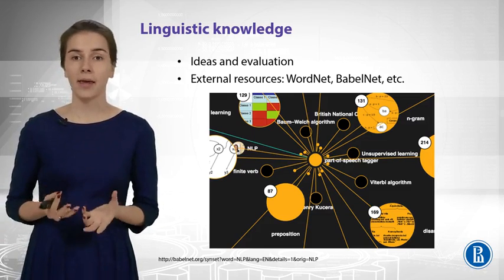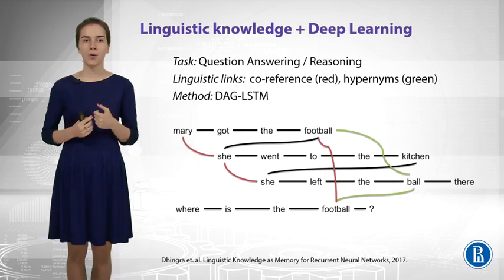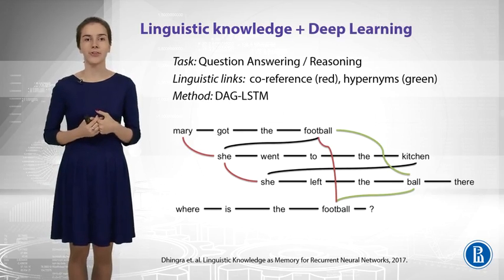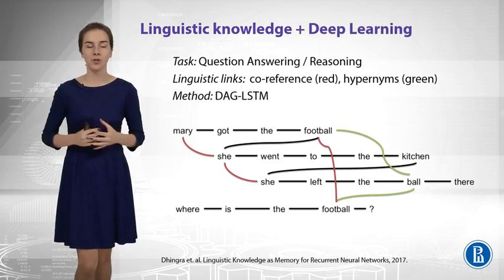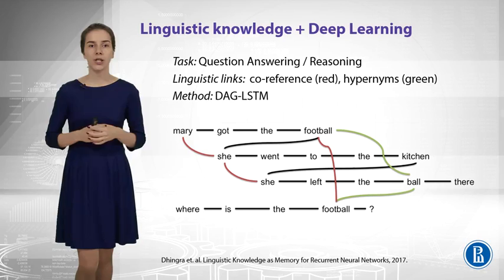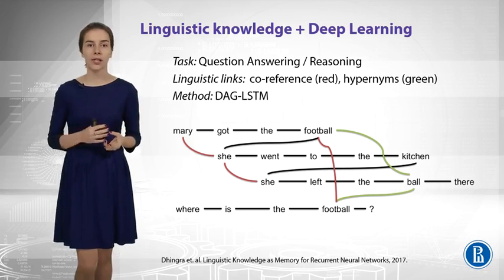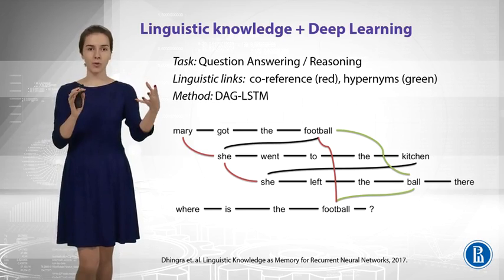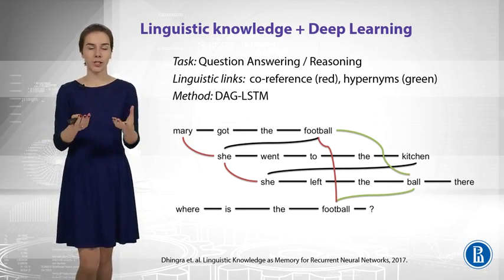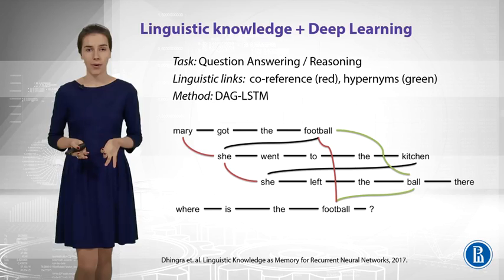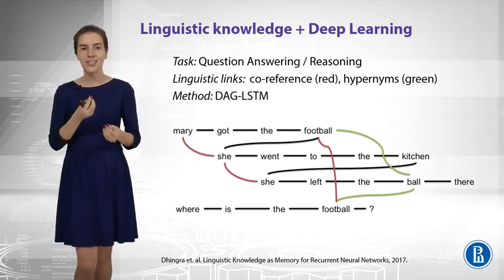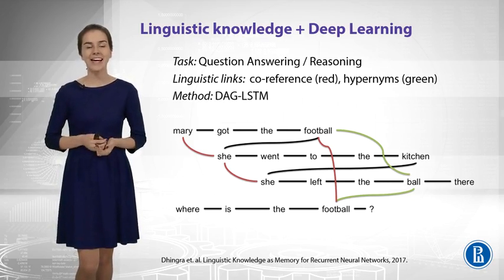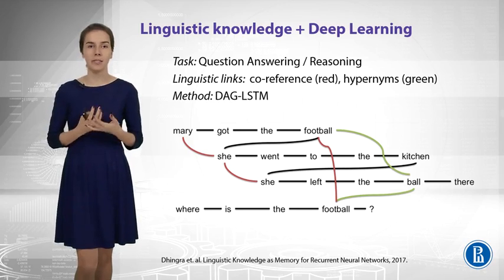For example, how can they be used? This is a rather complicated task called reasoning. There is some story in a natural language — for example, Mary got the football, she went to the kitchen, she left the ball there. We have some story, and now we have a question after this story: where is the football now? To answer this question, the machine needs to somehow understand something, and the way we can build this system would be based on deep learning.